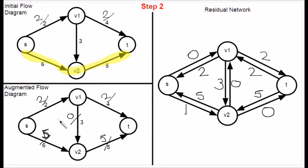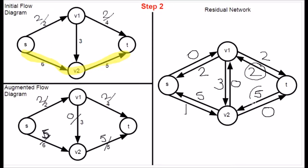What path do we choose next? We have reached maximum capacity on this edge, as well as this edge, meaning there is now no more available path from the source to the sink. We cannot augment this network further. Therefore, we can now work out the maximum flow within the network. To do this, we look at the residual network. The maximum flow is the sum of the flow entering the source or leaving the sink. Therefore, 2 and 5. 2 plus 5 is 7, which is our max flow.